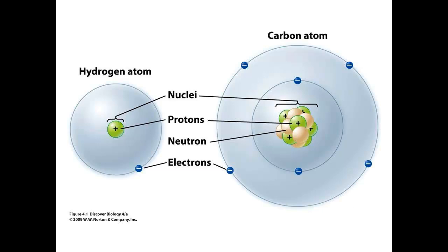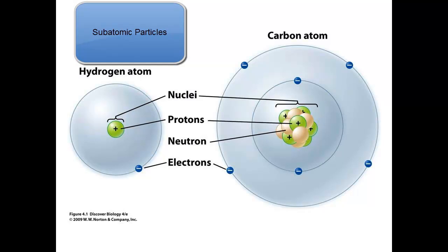Even though atoms are the smallest units of an element, there are smaller particles that make up atoms. We call these subatomic particles, and they are found in three types.